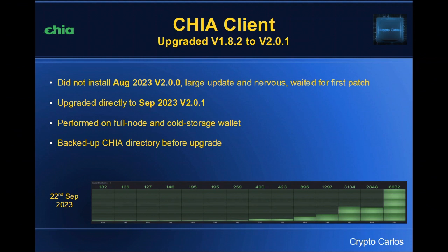Before we go into them, I just want to give you a little bit of an update on my upgrade path to the latest version of the client. Version 2 came out in August of 2023. I didn't upgrade at that point — going through the Chia documentation I saw there was a very large update and I was nervous and wanted to wait for a patch. Sure enough, a month later 2.0.1 came out and I was more comfortable to upgrade. I upgraded directly from 1.8.2 to 2.0.1 on both my full node and my cold storage wallet with absolutely no issues at all.